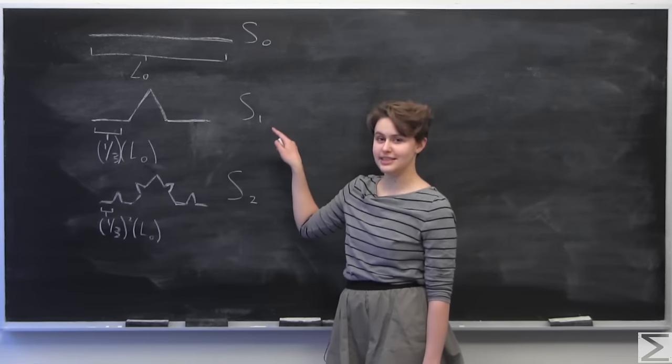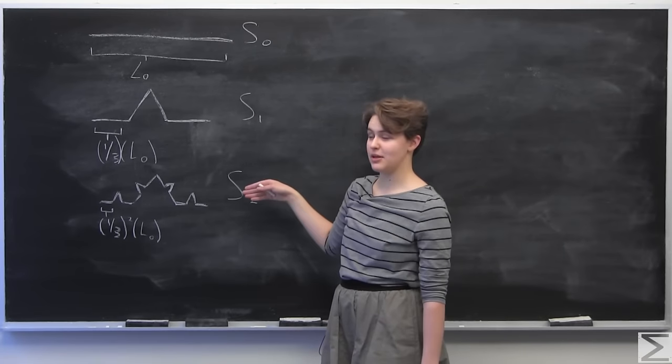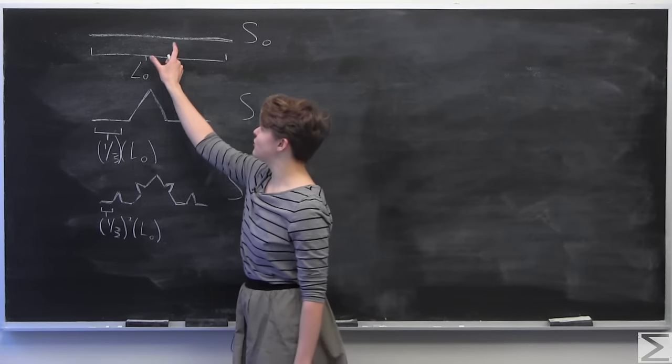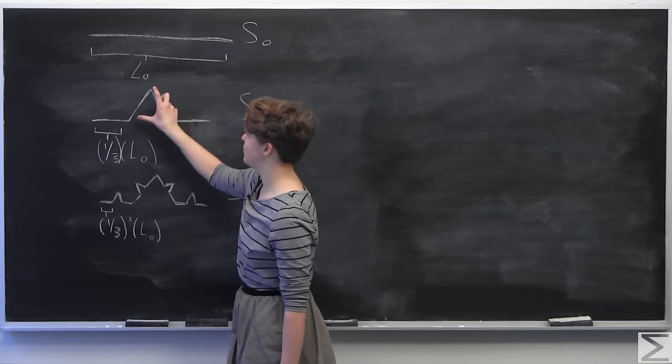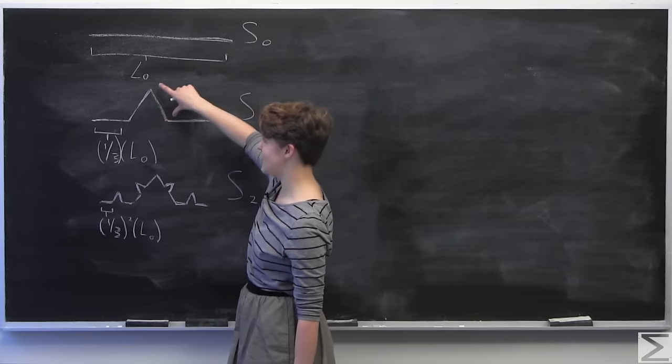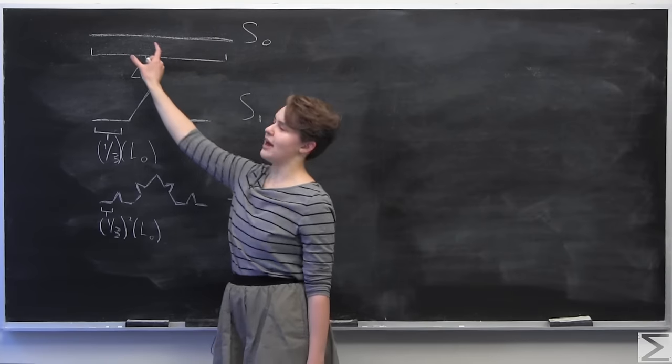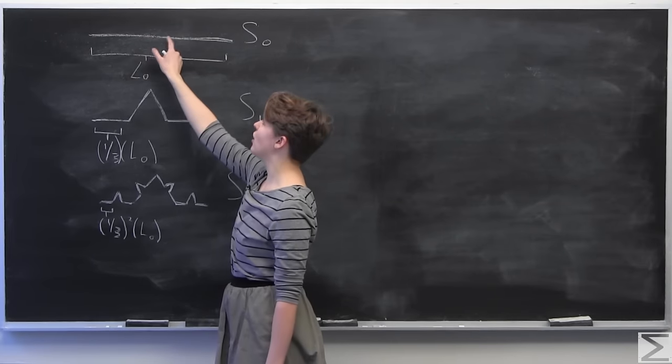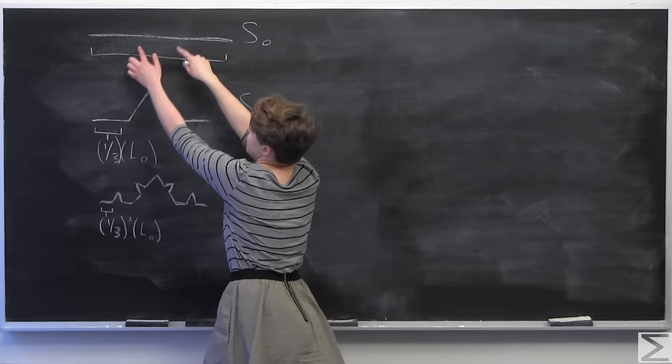The way that we create the second line segment and every line segment from then on is we remove the middle third of that line segment, and we replace it with the two sides of an equilateral triangle of the length of one third of the length of the chunk that we just took out.